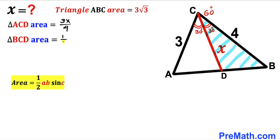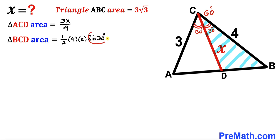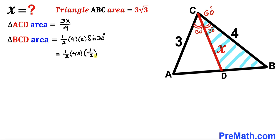So the area of triangle BCD is one half times 4 times X times sine of 30 degrees. Since sine of 30 degrees is one half, this becomes one half times 4 times X times one half.